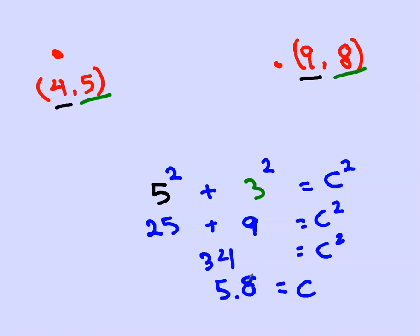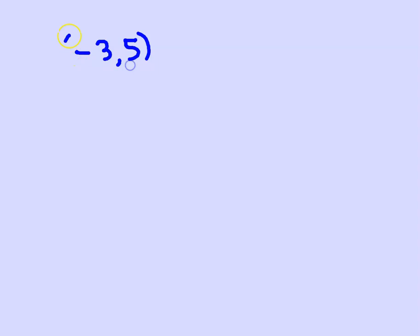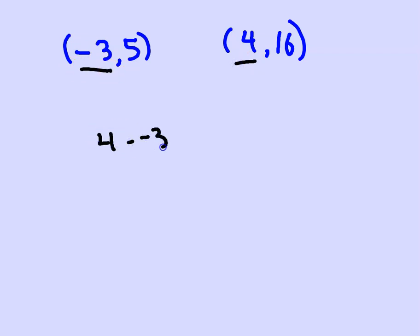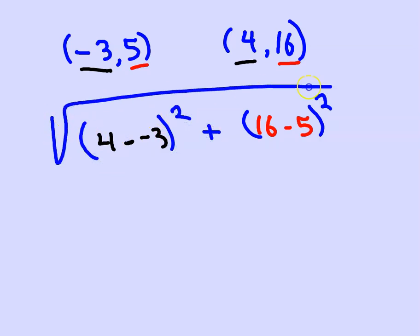So what we're doing every time is the same thing: get one side by subtracting the X's, the other side by subtracting the Y's, then do the Pythagorean theorem just like before. Suppose you give me a wacky point like negative 3, 5 and 4, 16. I don't have to put these on the graph. I just subtract the X's: 4 minus negative 3, which gets me the horizontal side. Subtract the Y's: 16 minus 5, which gets me the vertical side. Then I square each of those, add them together, and square root.